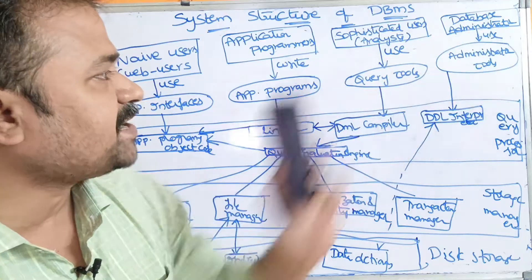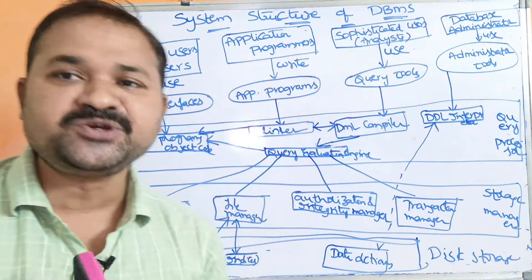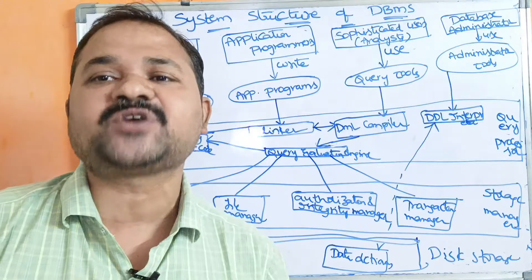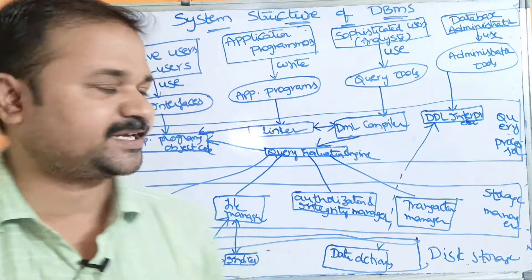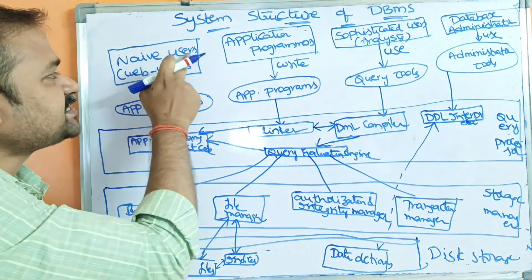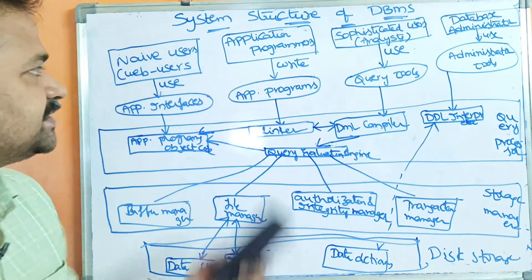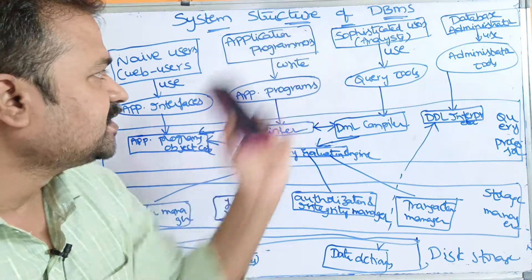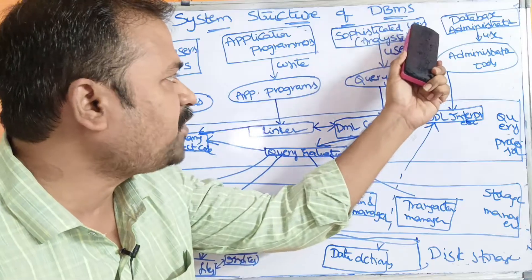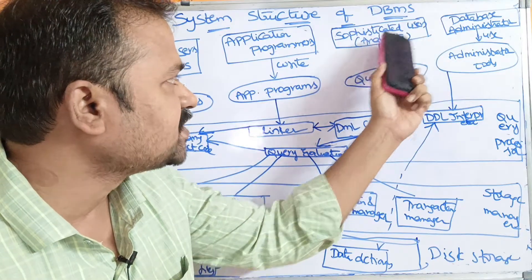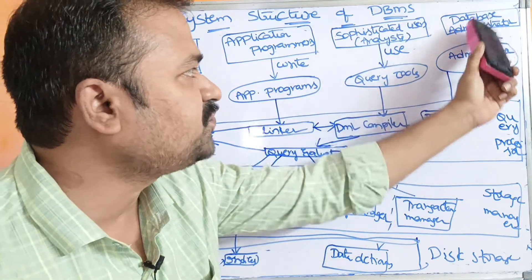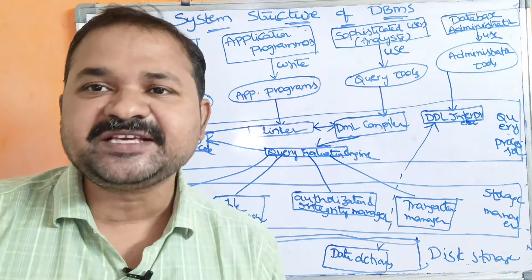First, let us see about database users. Mainly we have four types of users. The first type of users is naive users. The second type of users is application programmers. The third type of users is sophisticated users. And the fourth one is database administrators.